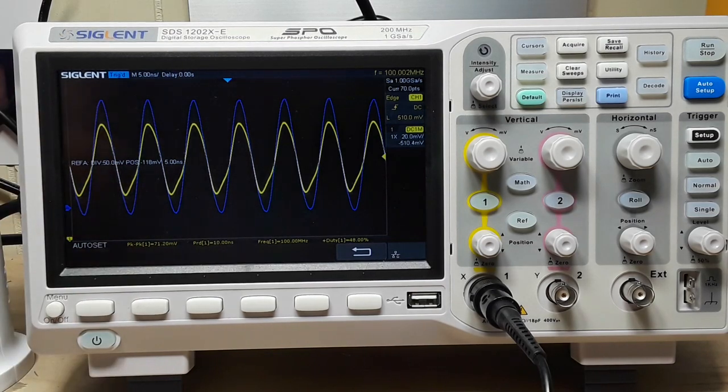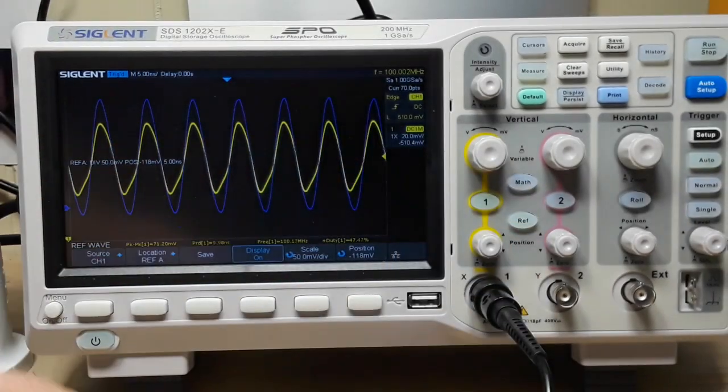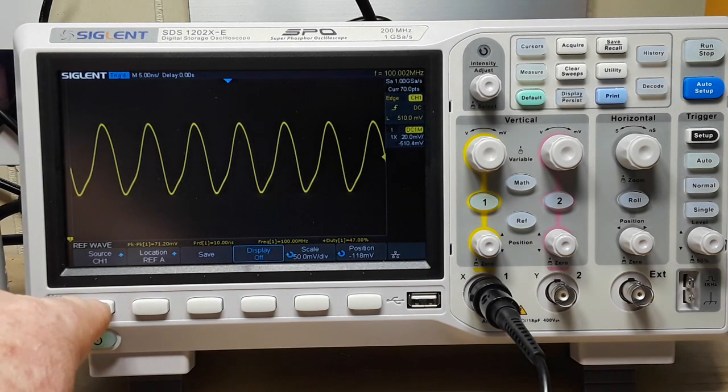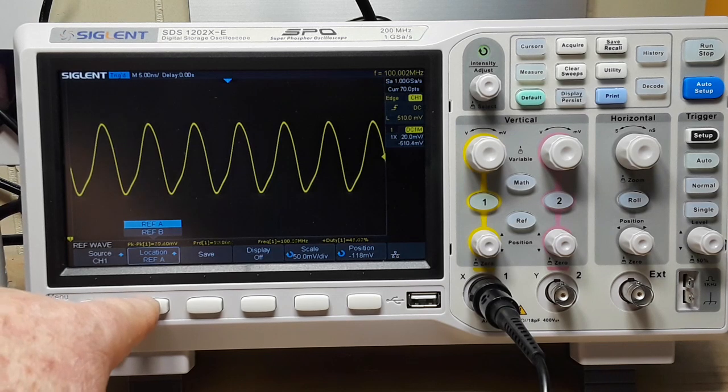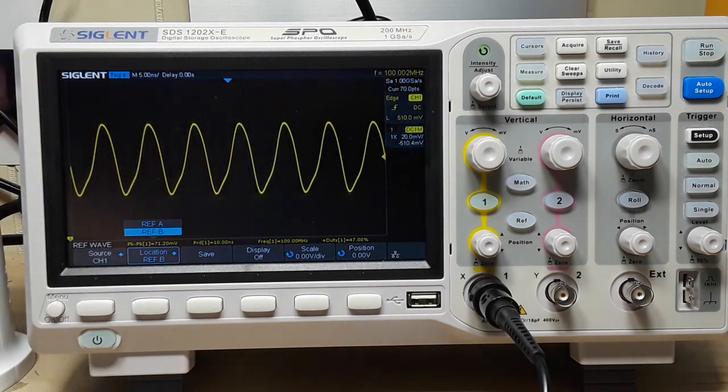Now all the other scopes do that, you just kind of have to hunt for it. This one I like because it's right there. Now I'm going to turn the display off here. You see the source is channel one. Location, you can save two of them, reference A and B. All you have to do is hit save, boom, you're good to go. It's really cool.